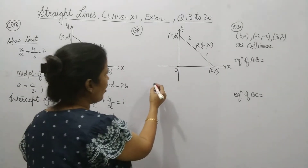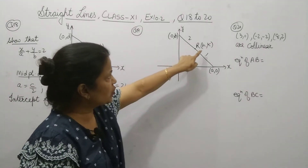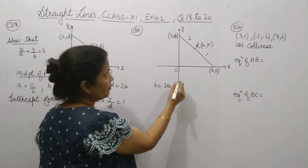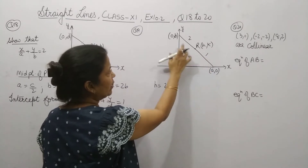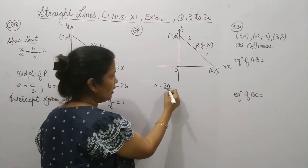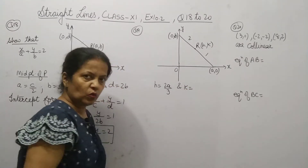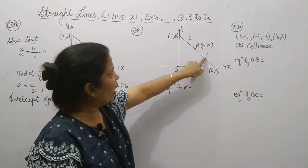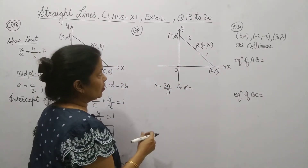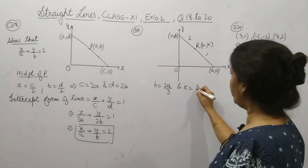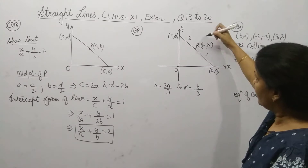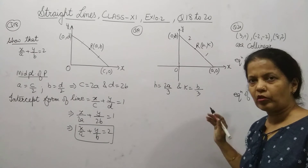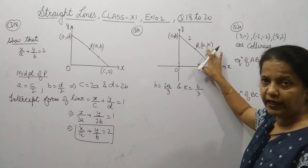h will be (2 × a + 1 × 0) upon 3, so h equals 2a upon 3. And what about k? k will be (2 × 0 + 1 × b) upon 3, so k equals b upon 3. So these are the values of h and k.